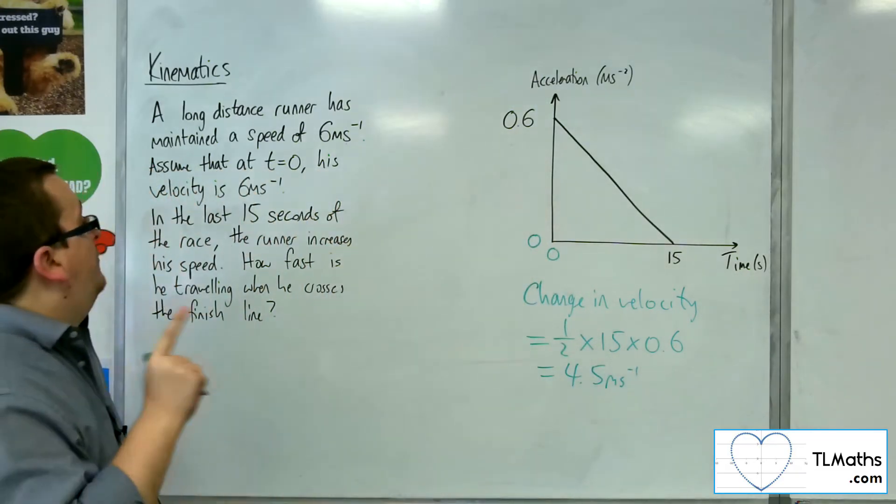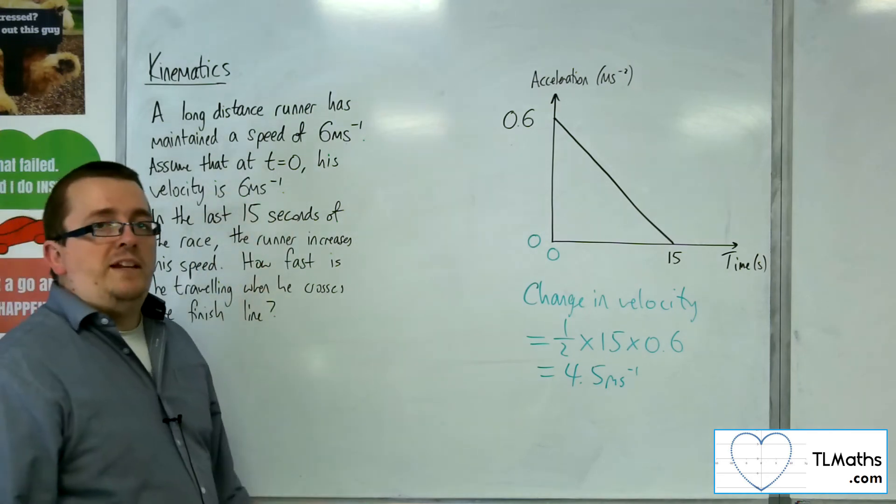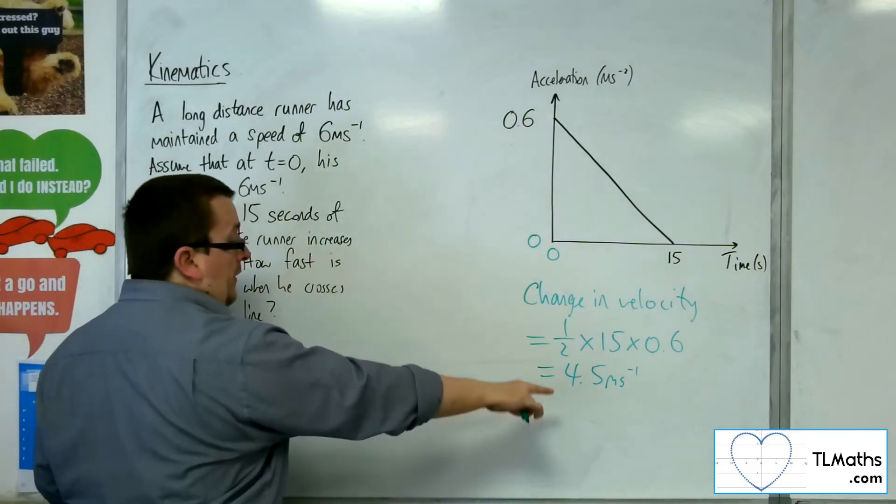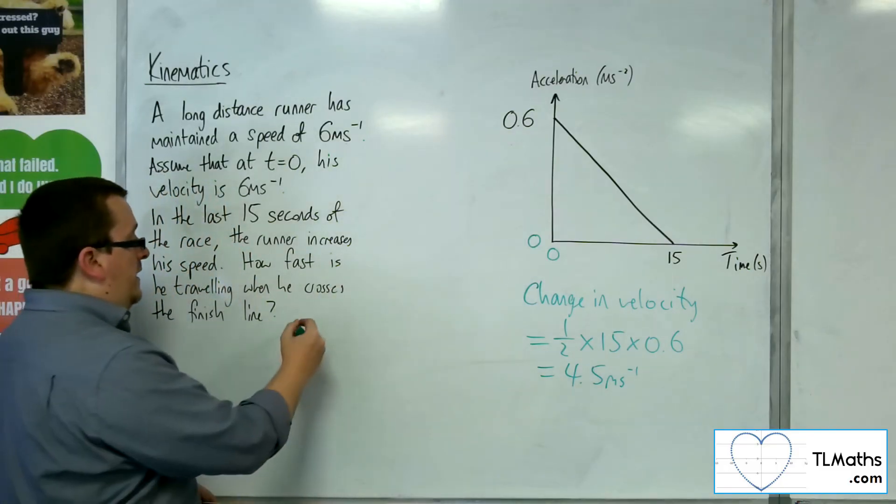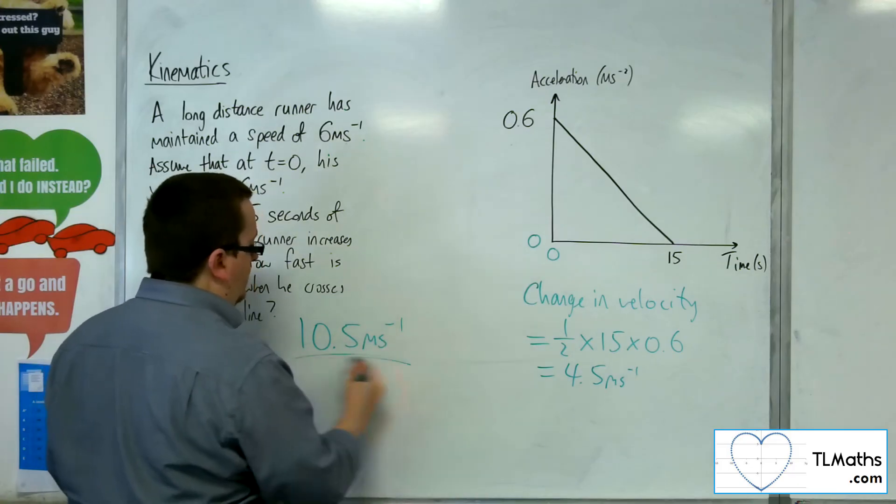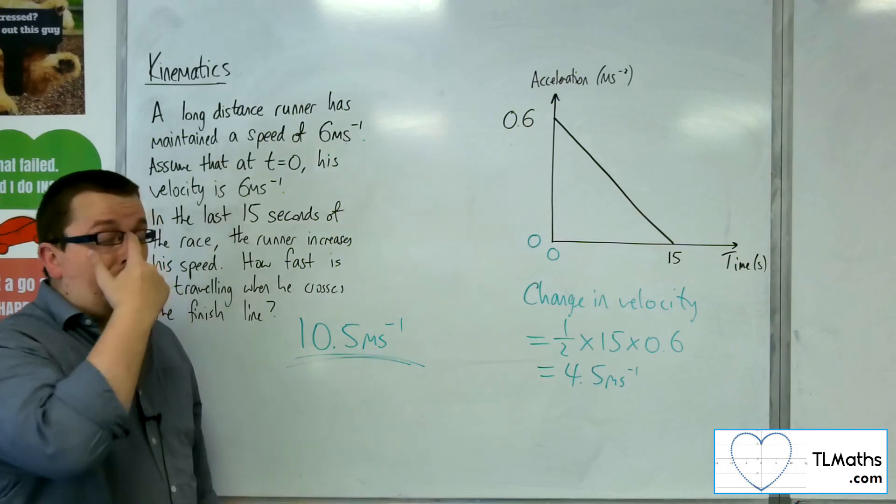So that means that if they were travelling initially at 6 metres per second, then they're going to cross the finish line travelling at 6 plus the 4.5 metres per second, and so 10.5 metres per second. That is how fast they will be travelling when they cross the finish line.